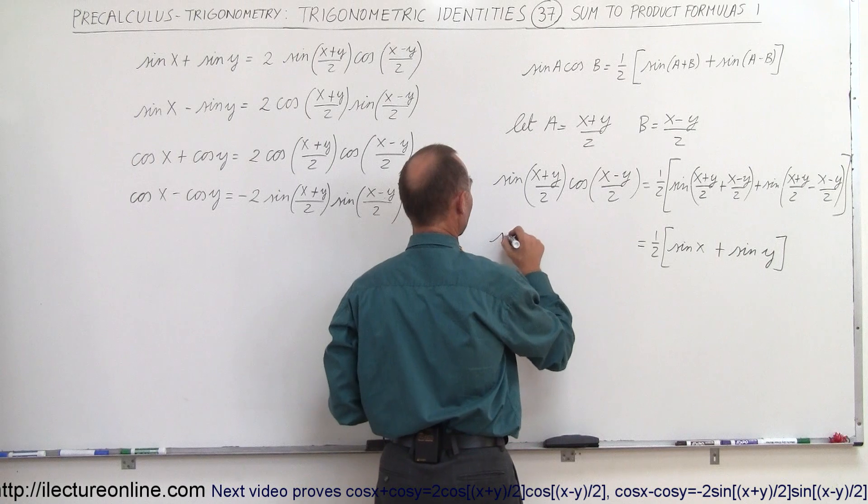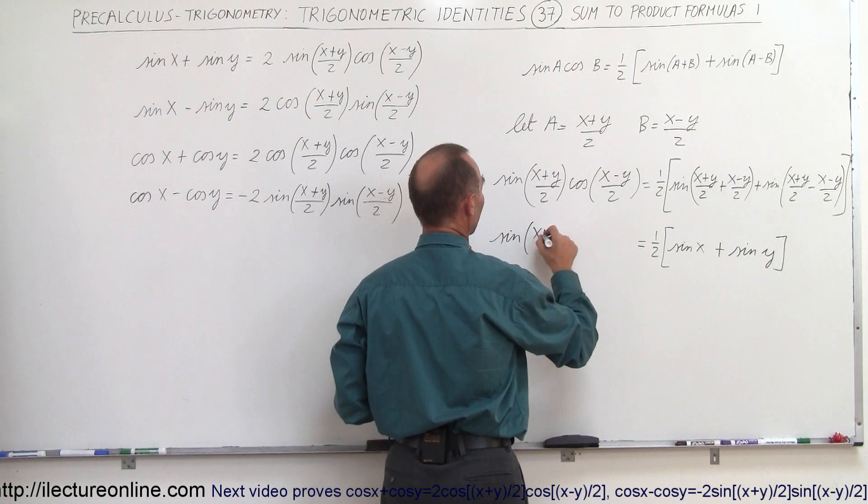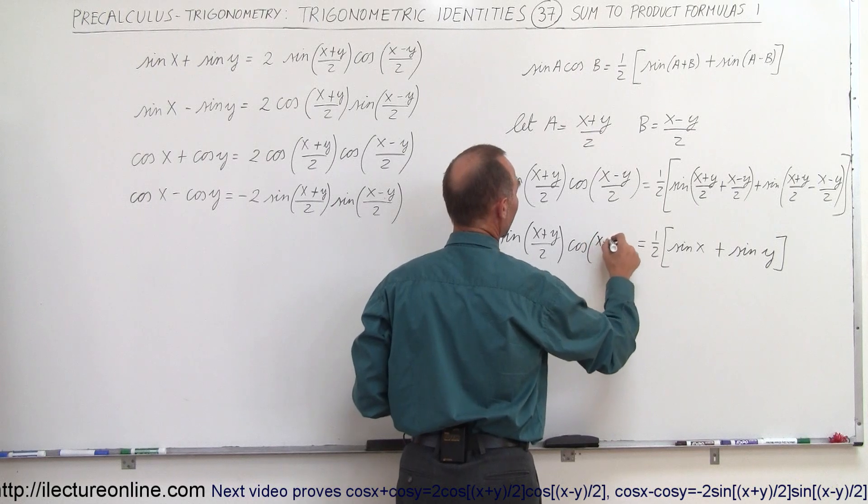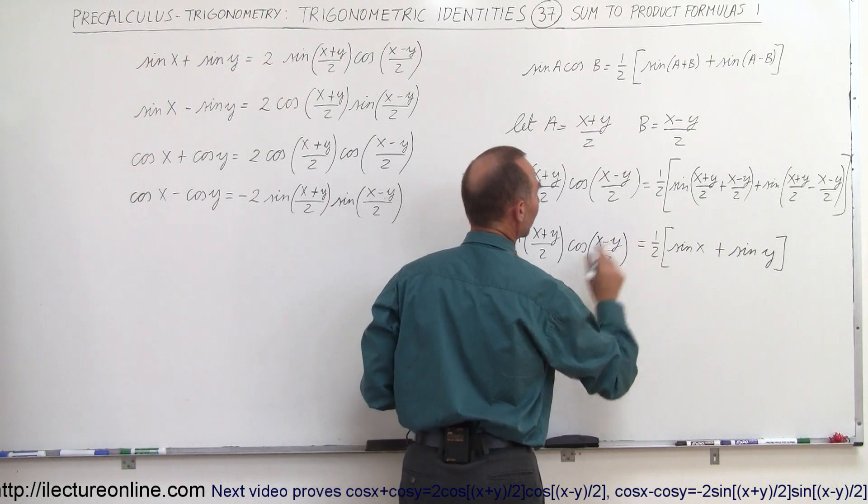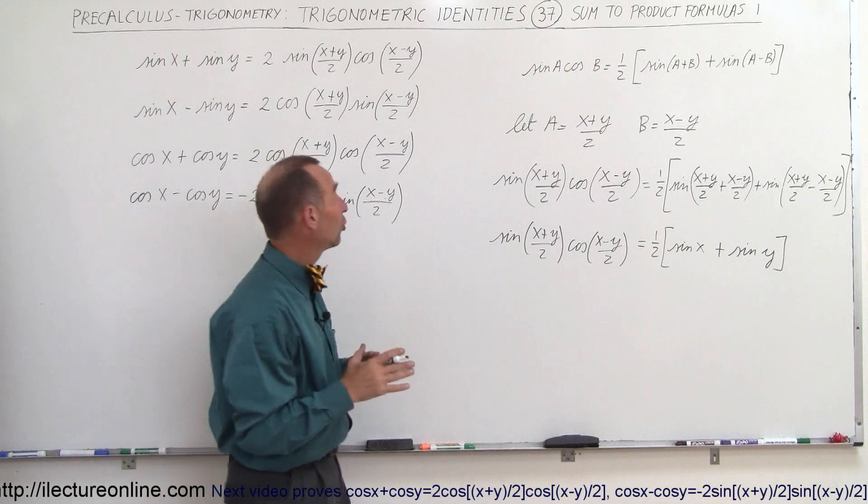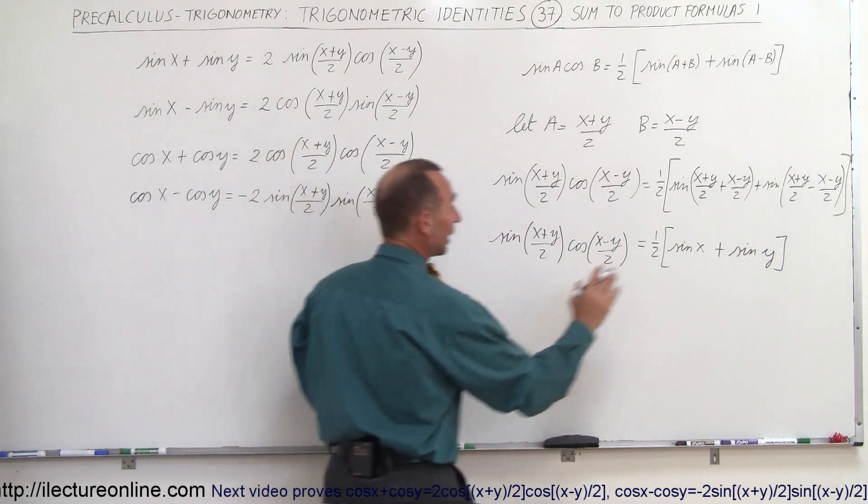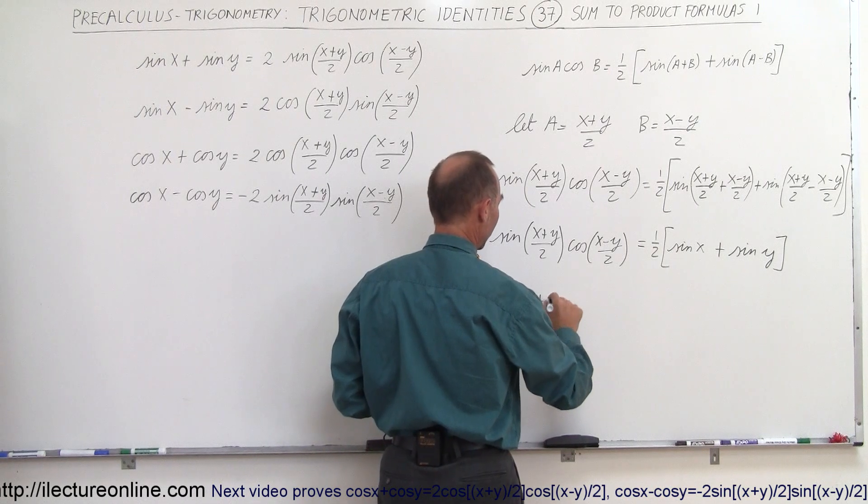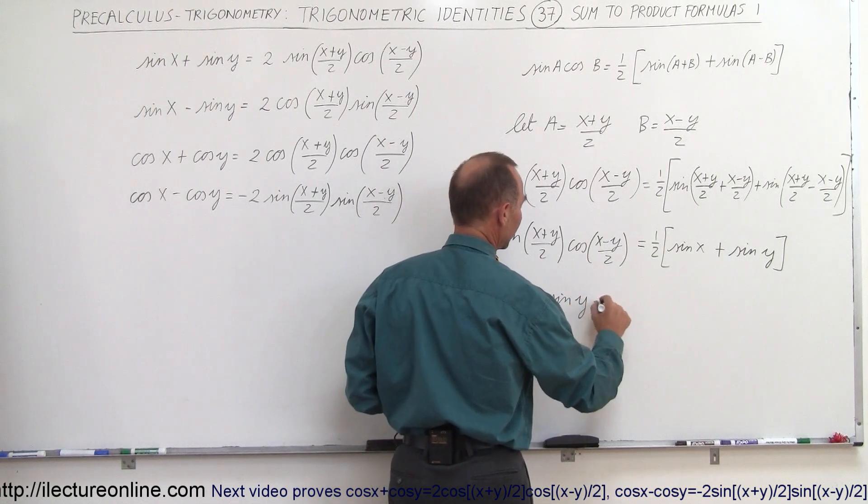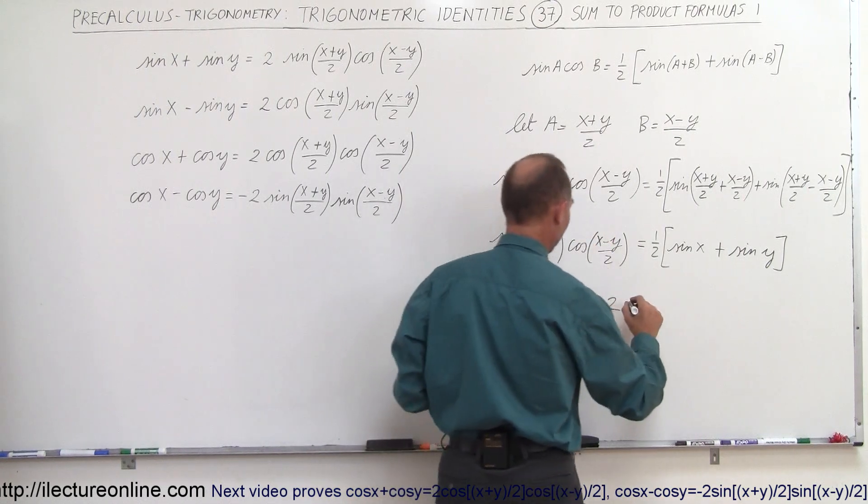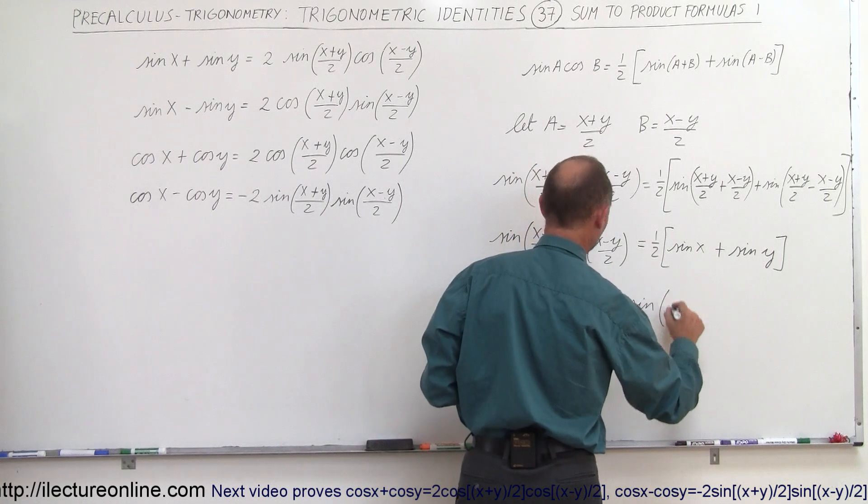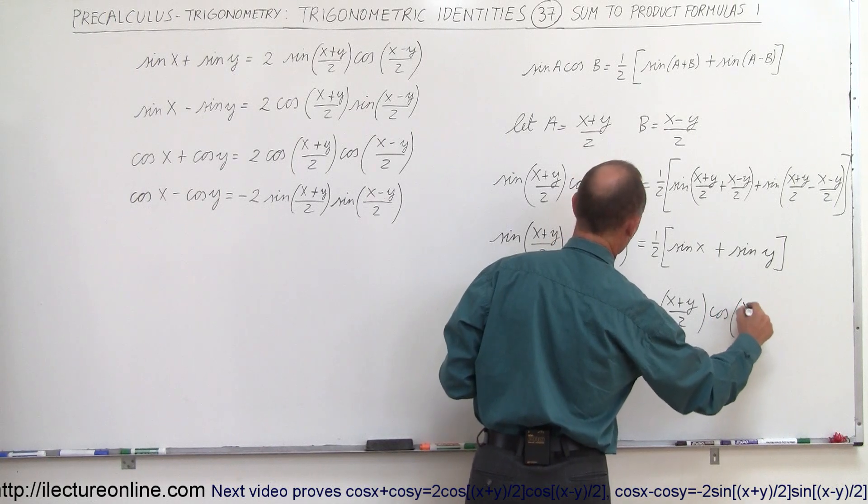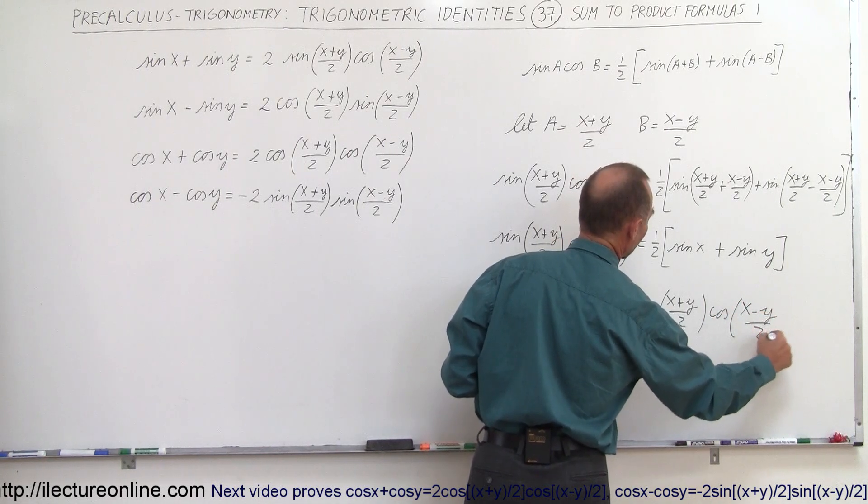And so here we can write that the sine of x plus y divided by 2 times the cosine of x minus y divided by 2 is equal to this. Now all we have to do is multiply both sides by 2 and if we do that and we turn the equation around we can then write that the sine of x plus the sine of y is equal to 2 times the sine of x plus y divided by 2 times the cosine of x minus y divided by 2.